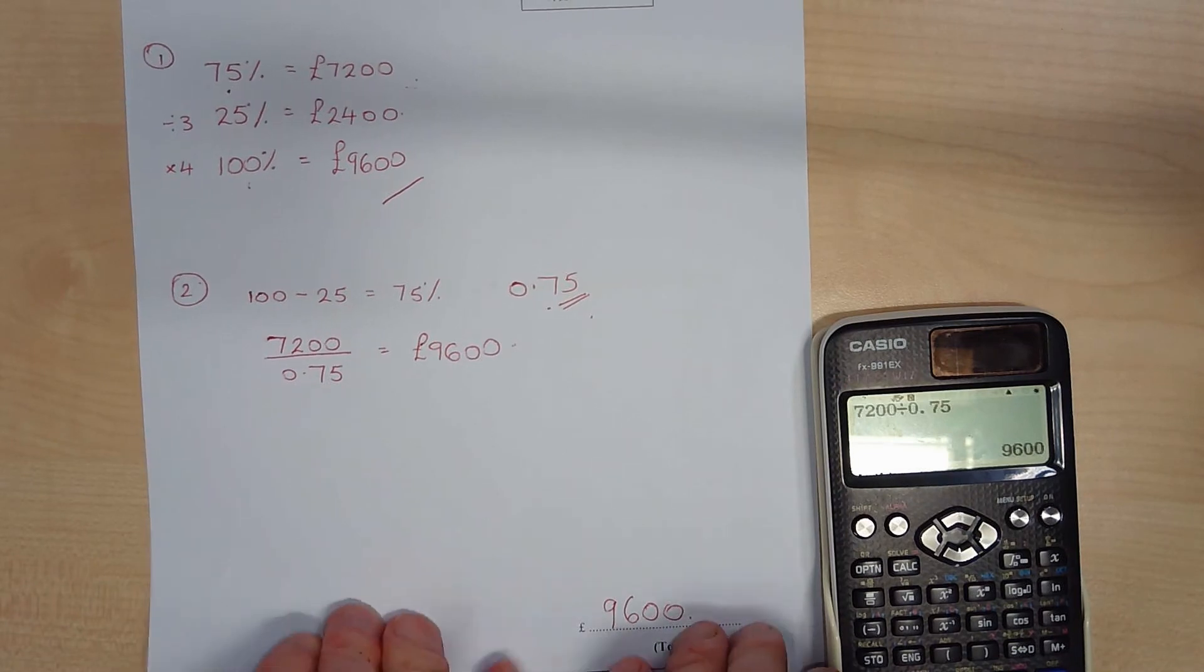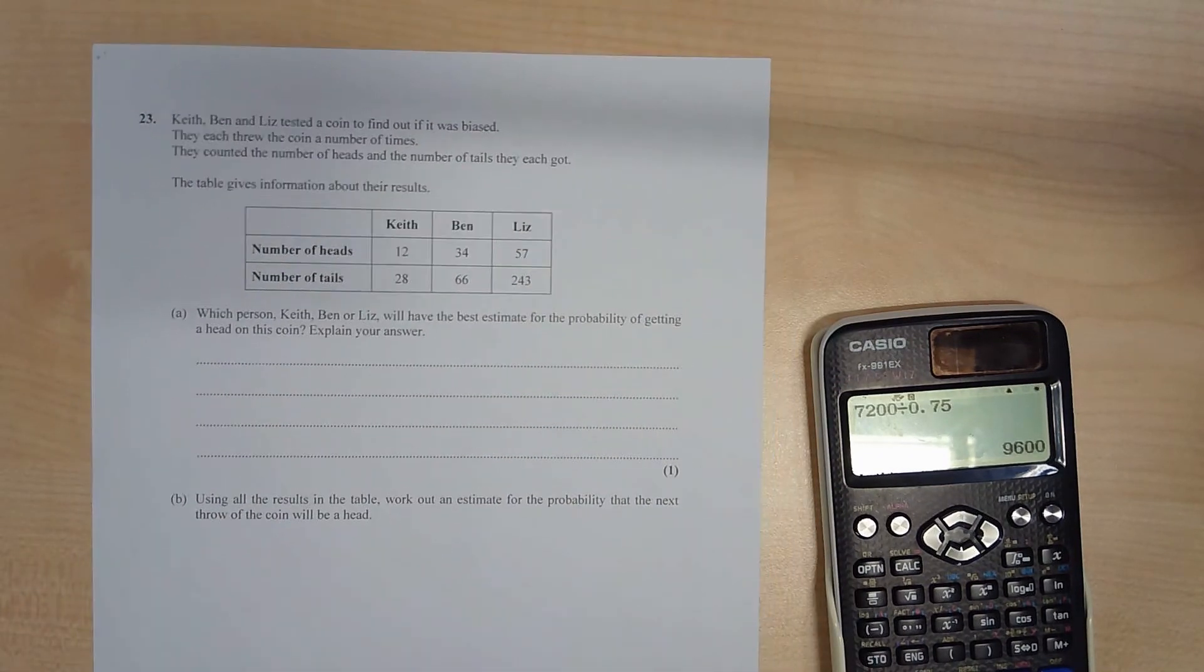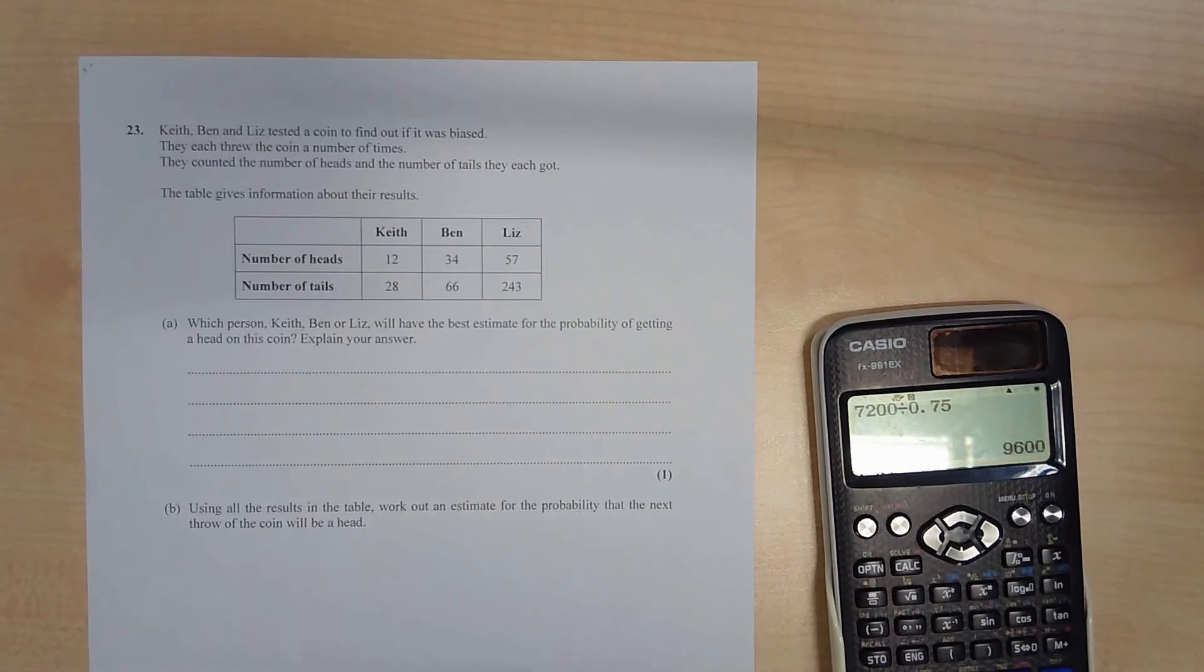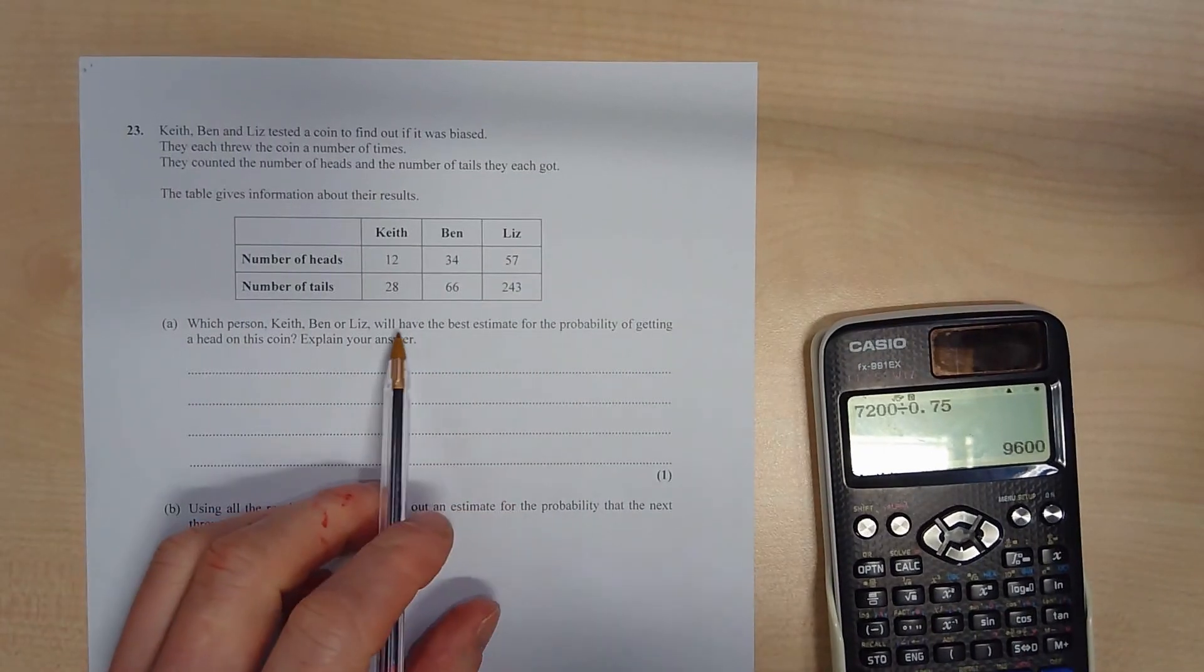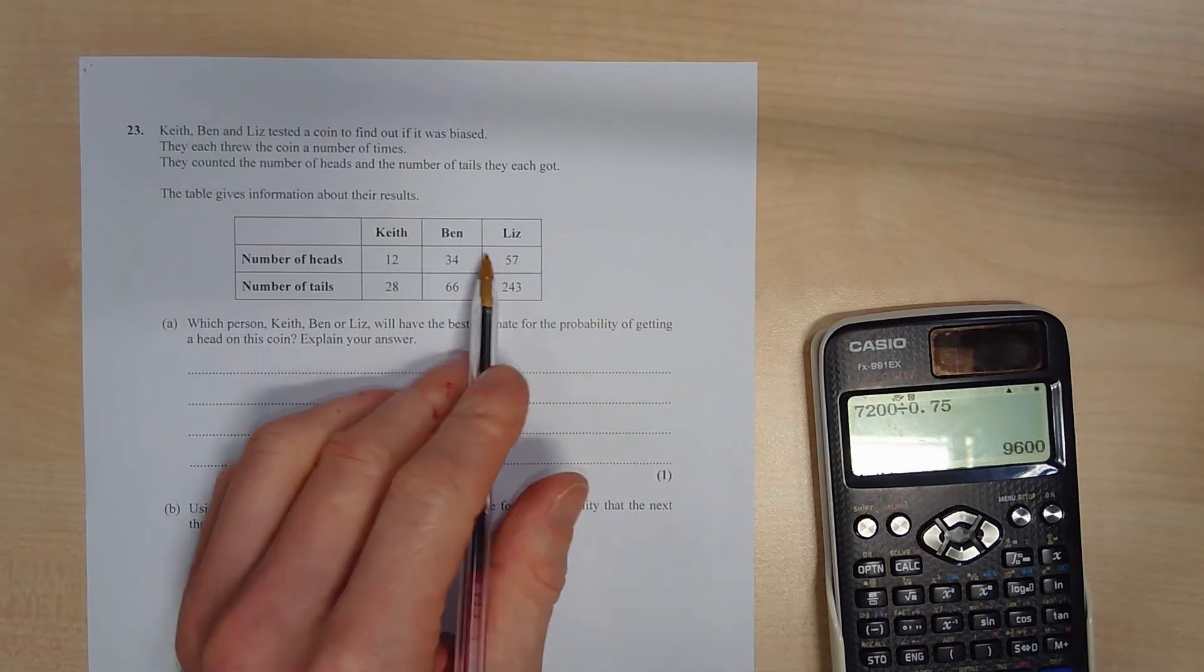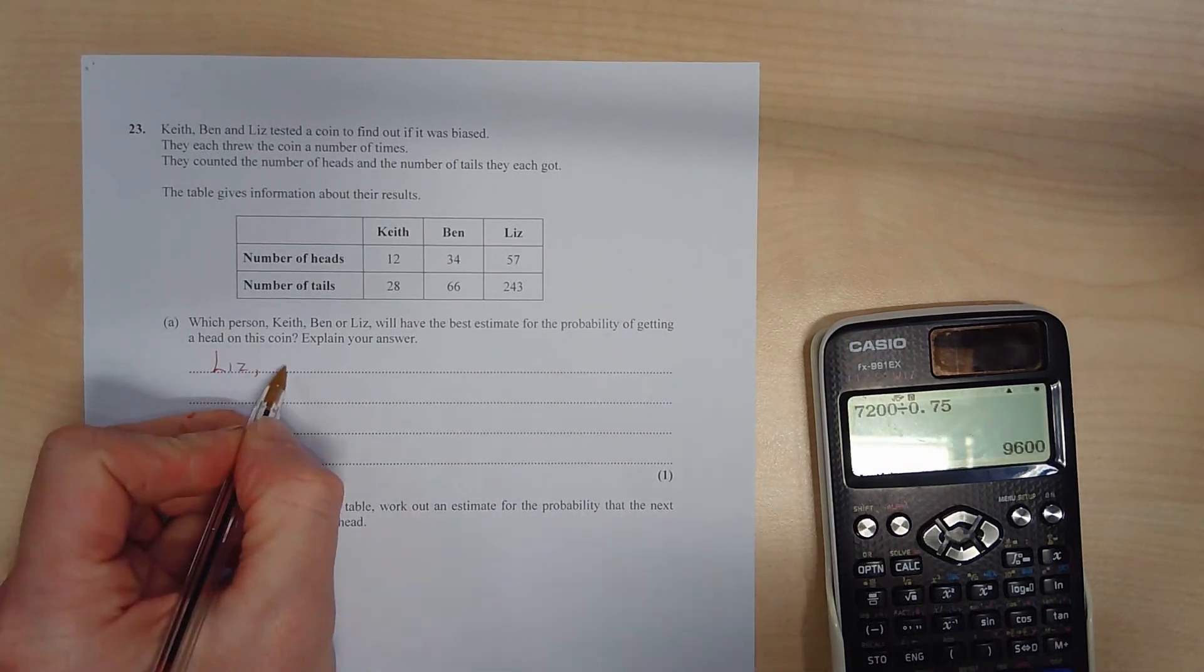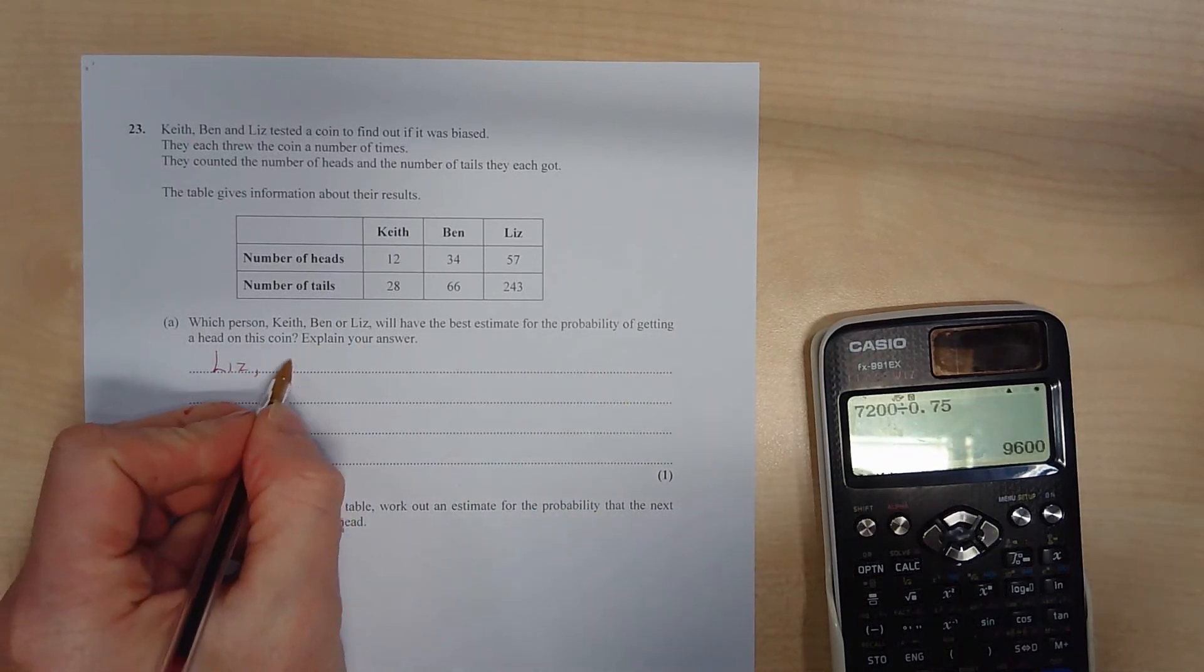Down there. Okay, last question. Um, tested a coin to see if it was biased, to see if it was fair or not. They each threw the coin a number of times, and their first question is which one of these people will have the best estimate? Well, it will be Liz, and because she's done the most amount of trials, she's thrown it the most.